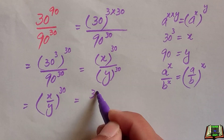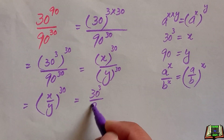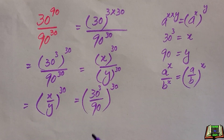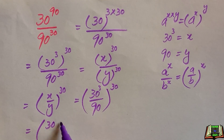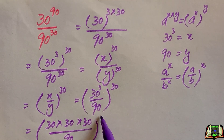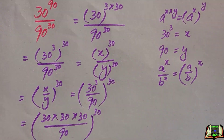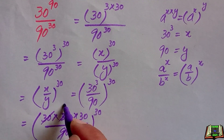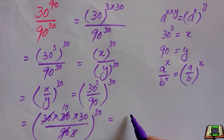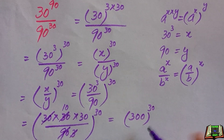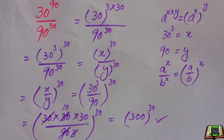Now we put the values of x and y back: x is 30 raised to power 3, divided by y which is 90, whole raised to power 30. Simplifying, 30 raised to power 3 is 30 times 30 times 30, divided by 90. This gives us 300 raised to power 30. I hope you find the solution easy — if so, please thumbs up. Thanks for watching.